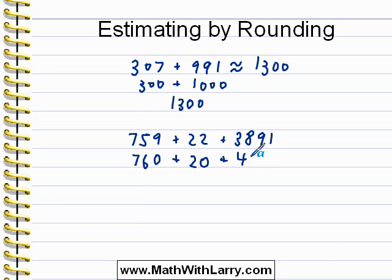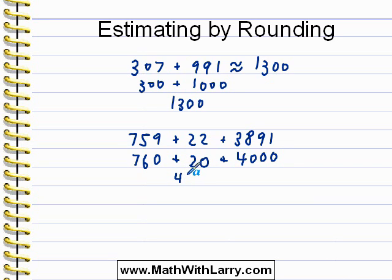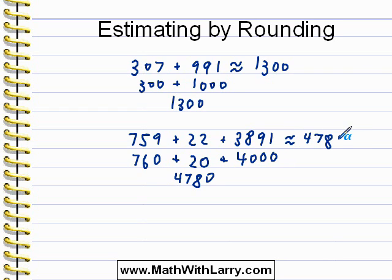Remember, we're just getting an estimated answer. Adding all these up, we can see that the answer is 4,780. So we can say that this sum is approximately equal to 4,780. It's not exactly equal to that, but it's close — it gives us a rough idea of what we expect our sum to be.